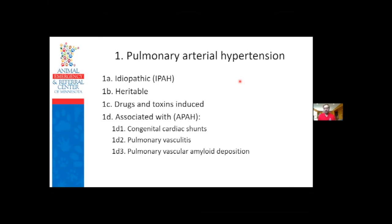Class 1, primary pulmonary arterial hypertension, includes idiopathic, heritable issues, drugs, toxins, or congenital left-to-right shunts like VSDs or PDAs causing excessive blood flow. Trying to cram extra blood into a system not made for that volume causes pressures to go up. Over time, that extra flow through the lungs can cause lung damage and may cause reactive or primary lung disease pulmonary hypertension to develop - so a lot of these become interconnected and sometimes multifactorial.